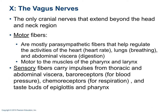Cranial nerve 10 is the vagus nerve — the only cranial nerve that extends beyond the head and neck — with both motor and sensory fibers. Motor fibers regulate heart rate, breathing, abdominal viscera in the digestive system, and muscles of the pharynx and larynx. The sensory portion carries impulses from abdominal viscera, baroreceptors for blood pressure, chemoreceptors sensing PCO2 and PO2 for respiration, and taste buds of the epiglottis and pharynx.